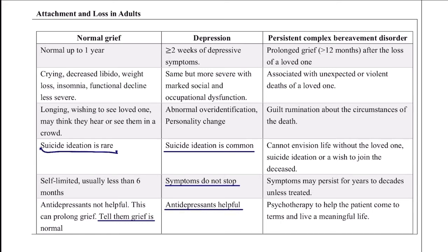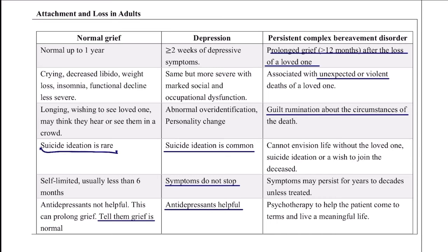Persistent complex bereavement disorder is prolonged grief lasting longer than 12 months after the loss of a loved one. It is associated with unexpected or violent deaths, where the person feels they could have done something to prevent it — there is a lot of guilt. They cannot envision life without the loved one and will not move on. Suicide ideation is very common. Symptoms may persist for years to decades unless treated with psychotherapy.